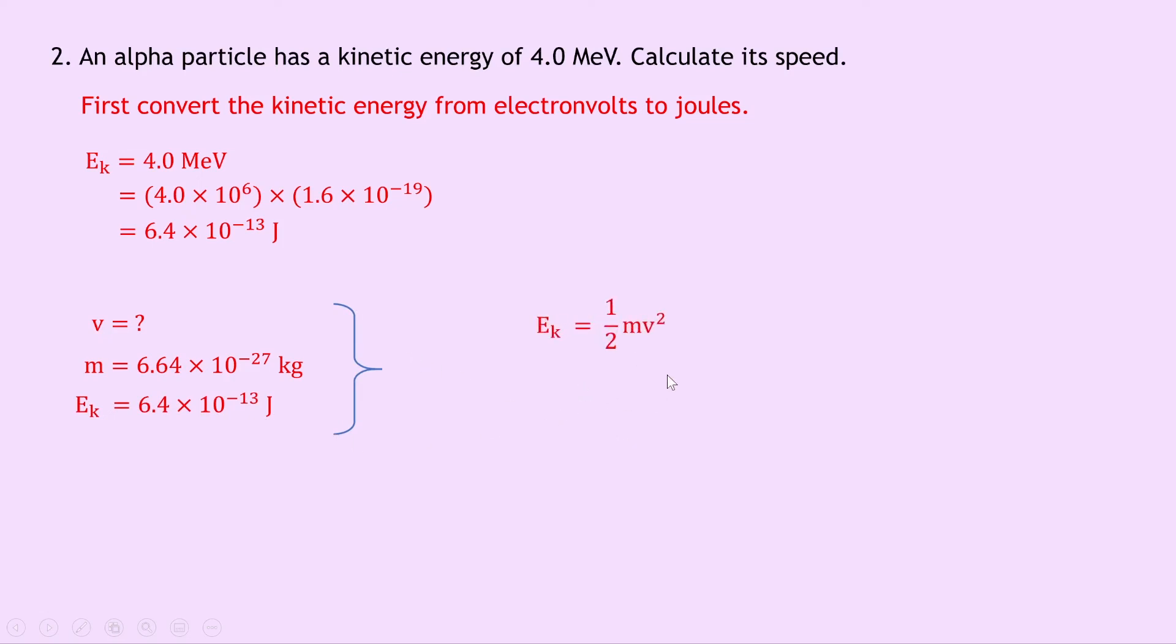Remember we want to find what V is. Substituting in our numbers we get 6.4 times 10 to the minus 13 equals a half times 6.64 times 10 to the minus 27 times V squared. So what I would do now is multiply both sides by 2 to get rid of the half. Then divide the left hand side by this value here.